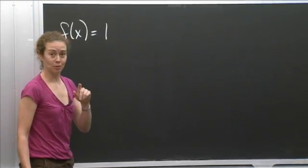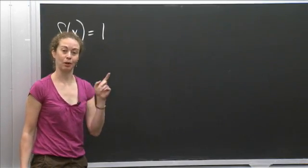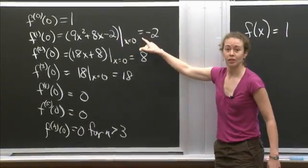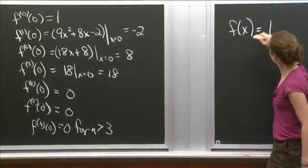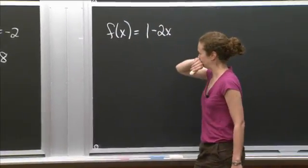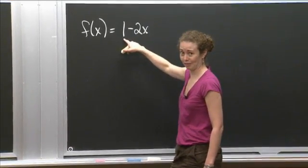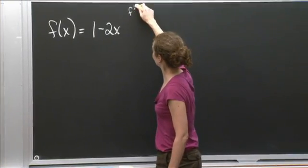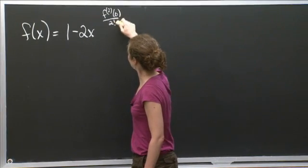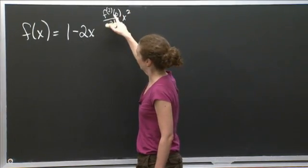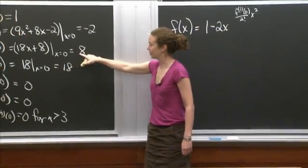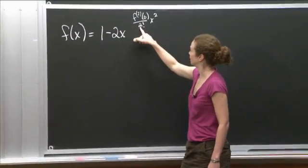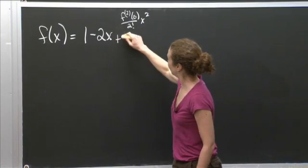OK, what's the next term? The next term is the first derivative evaluated at 0 divided by 1 factorial, which is still 1, times x. The first derivative, if I come back over here, evaluated at 0, I get negative 2, so I'm going to get minus 2x. The next term, now I'm at the second derivative. It's the second derivative evaluated at 0 divided by 2 factorial times x squared. The second derivative evaluated at 0 was 8, so it's going to be 8 over 2, because 2 factorial is 2, x squared. So it's going to be plus 4x squared.